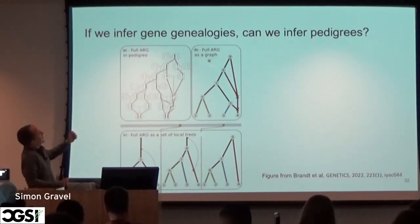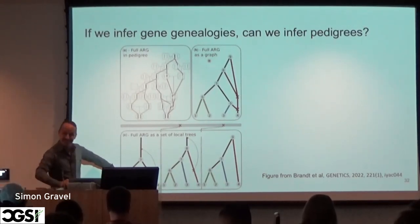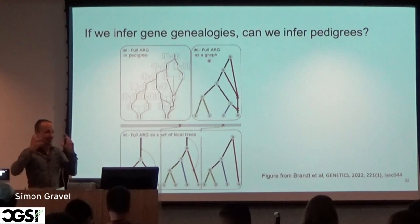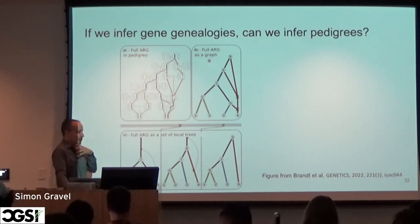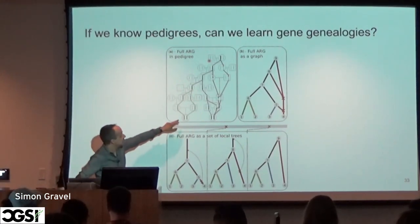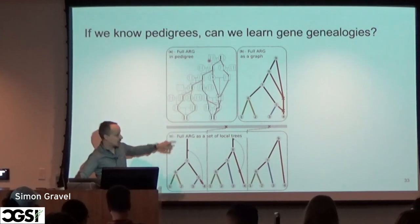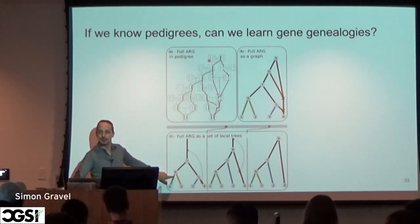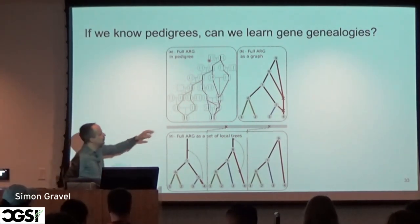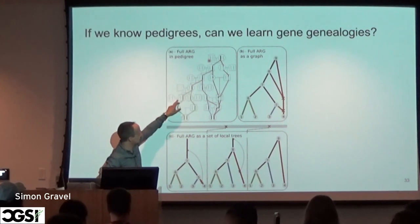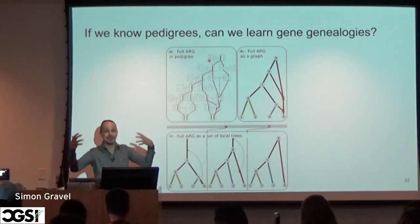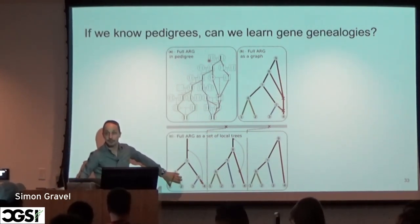The next question is: if we have this ARG, can we infer the pedigree? The answer is no, not yet — unless you sample the entire population. Let's ask a slightly easier question: if you have the pedigree, can you do a better job at learning the relationships between individuals? If you know the pedigree-relatedness between individuals, it's a very strong constraint on where the common ancestors might have lived, so you should in principle be able to use this information to improve gene genealogy inference.